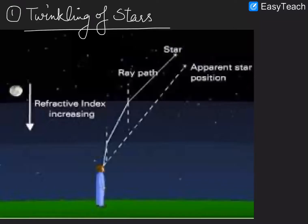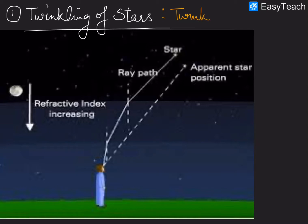The first very common example of atmospheric refraction is the twinkling of stars. The apparent position of the stars is different from their actual position, and since they are far away from us they appear to be twinkling. During night, the layers near the Earth's surface have a higher refractive index.